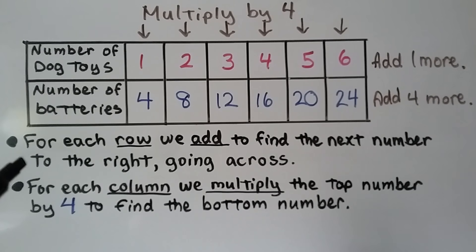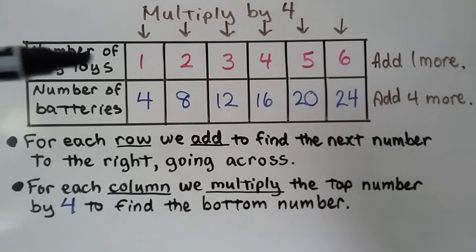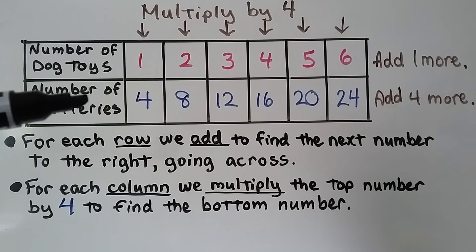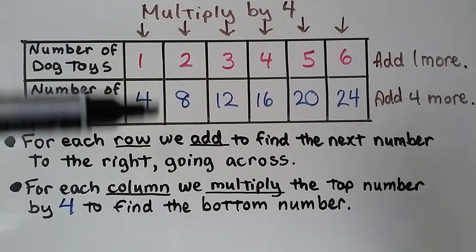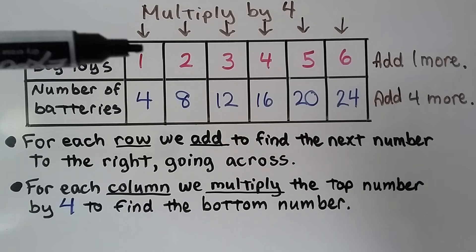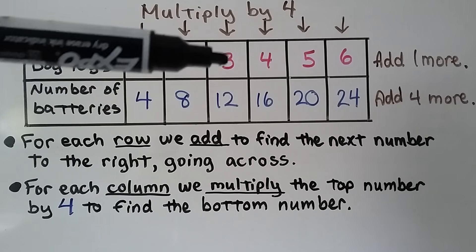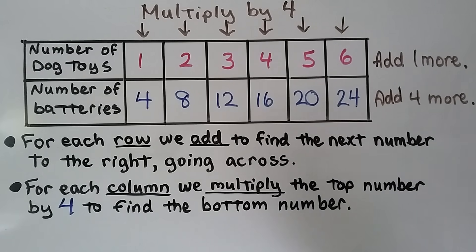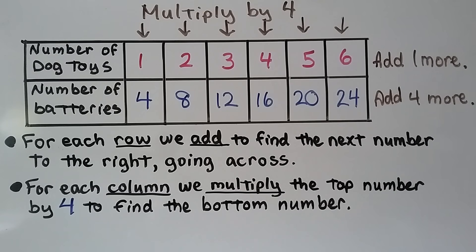For each row, we add to find the next number — we added 1. For each column, we multiply the top number by 4 to find the bottom number: 2×4 to get 8, 3×4 to get 12, and so on. So for the rows we add going across, and for the columns we multiply by 4 — that's our rule.